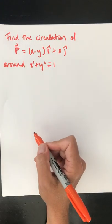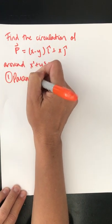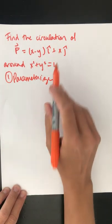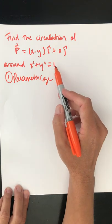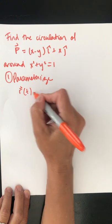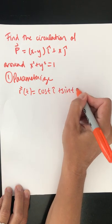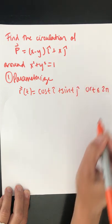The first thing I want to do is parameterize. We're working around the whole circle, so if this was a conservative field, we would net nothing. To parameterize the unit circle, I have my vector-valued function, cosine t i-hat plus sine t j-hat, where t will be from 0 to 2 pi.